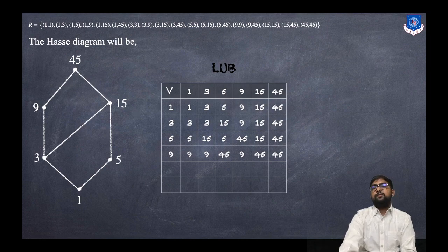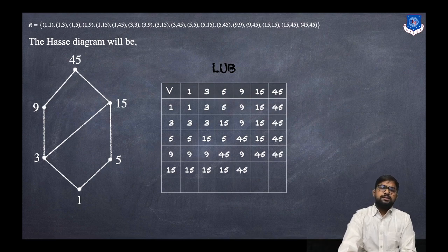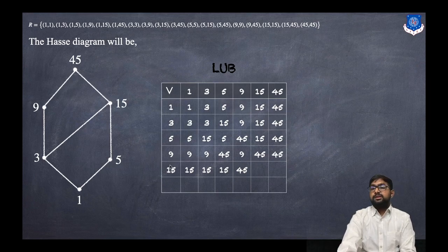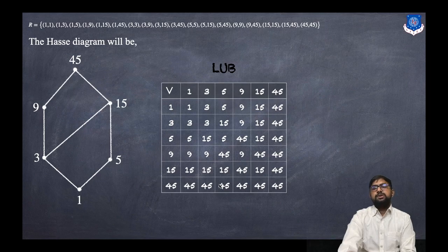For 15: LUB(15,1)=15, LUB(15,3)=15, LUB(15,5)=15, LUB(15,9)=45, LUB(15,15)=15, LUB(15,45)=45. For 45: all entries are 45 since 45 is the upper bound. Every pair has a least upper bound.